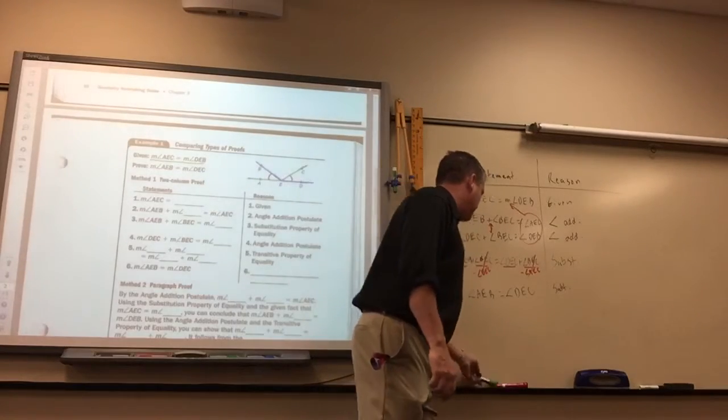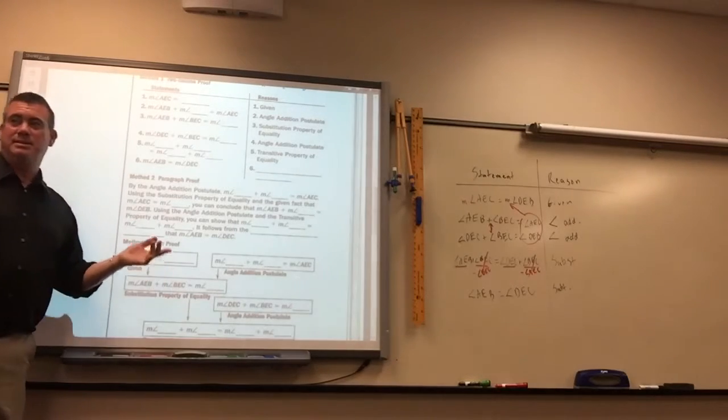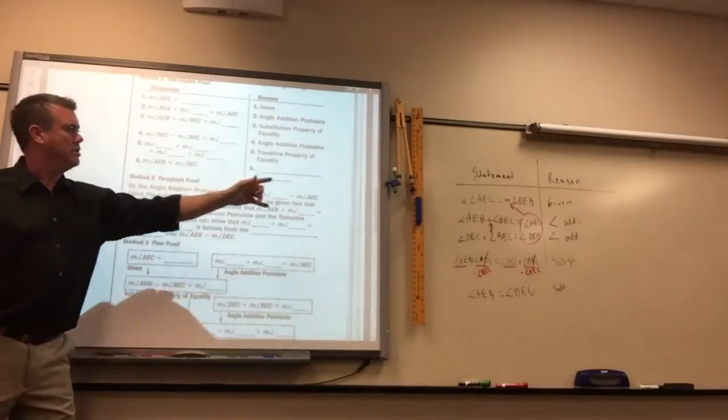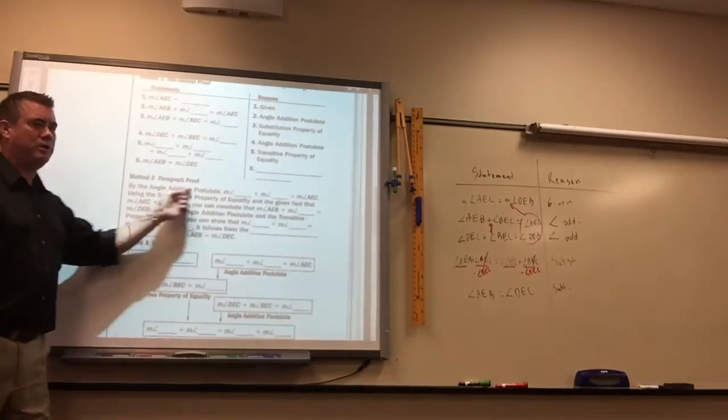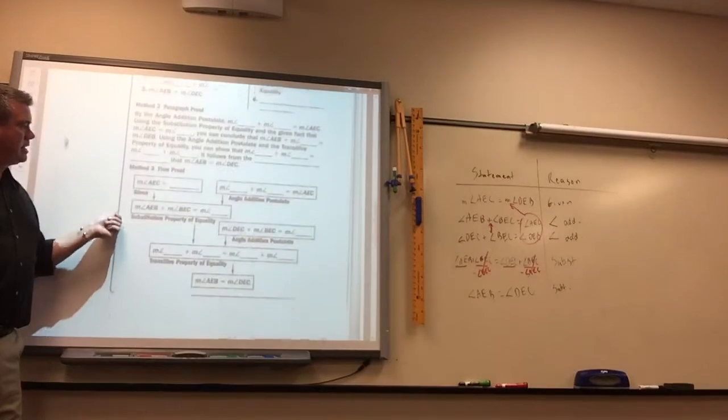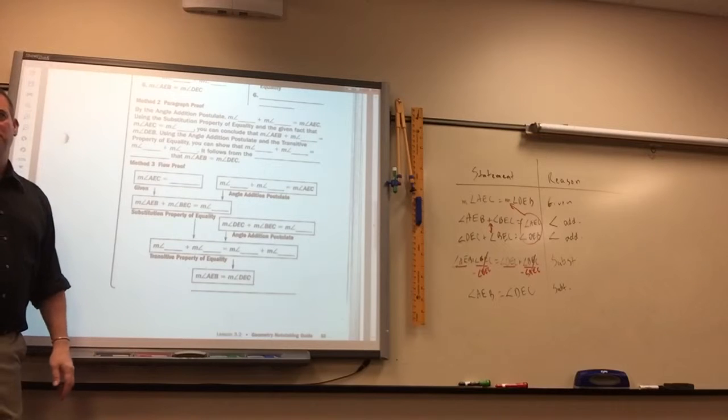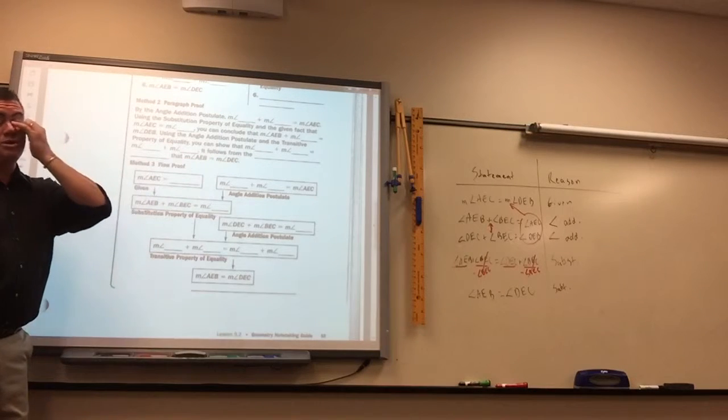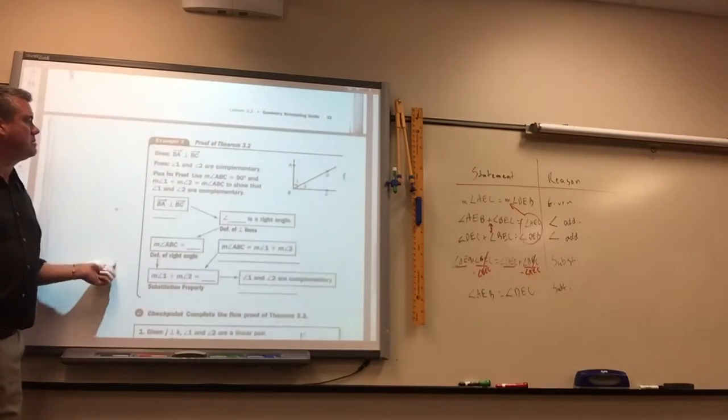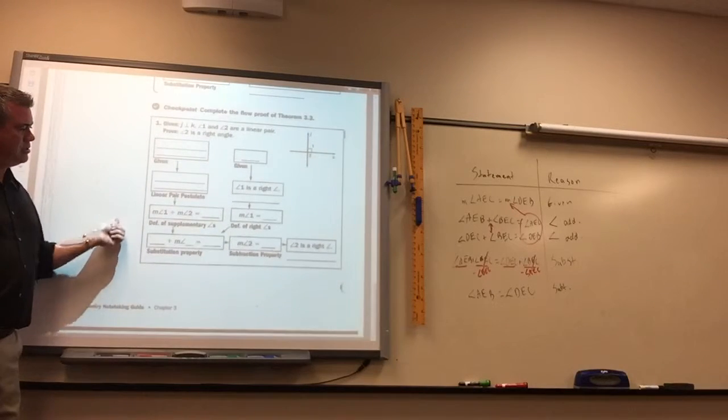So, that's it. Now, here's an example. I don't know who in their right mind would like reading a paragraph proof, but this is the same proof except written like in a paragraph. And then here they got an example of the flow proof, which again, it's kind of hard to read. So, that's why when we do our proofs, we're just going to do the two-column proofs. Okay, we don't need to do that. All right.